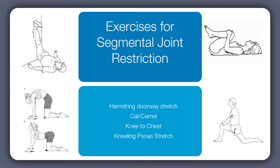The four exercises most often recommended for segmental joint restriction are the Hamstring Doorway Stretch, Cat Camel or Cat Cow, the Knee to Chest Stretch, and the Kneeling Psoas Stretch.